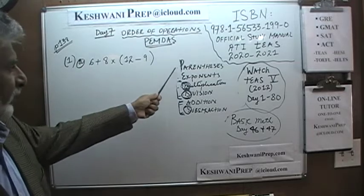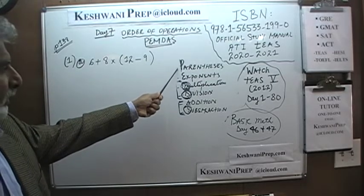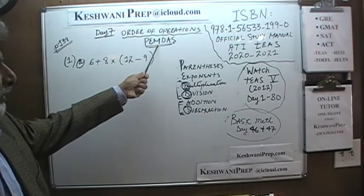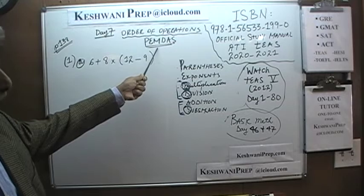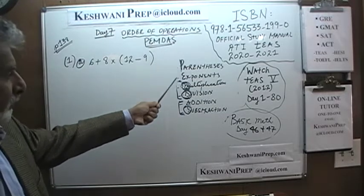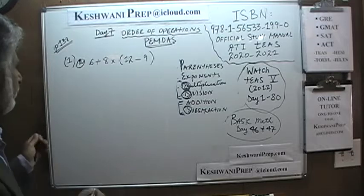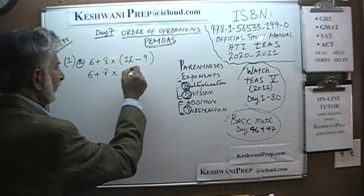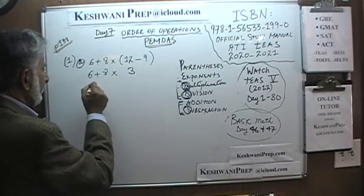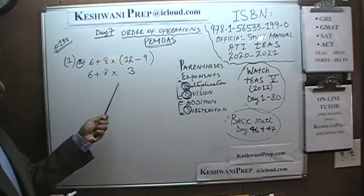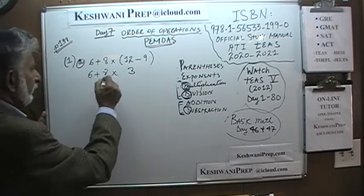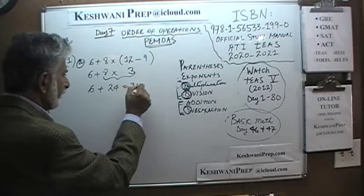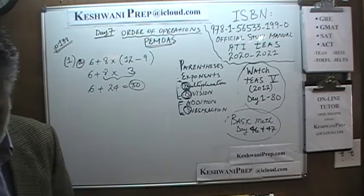The very first thing we do is the parenthesis that appears first — the order of operations: parenthesis, exponent, multiplication, division, addition and subtraction. I am sure you have heard of something called PEMDAS, which is a mnemonic device to help us remember the proper order of operations. So we do the parenthesis first. We end up with 6 plus 8 times 12 minus 9, and 12 minus 9 is 3. Now we have addition and multiplication. Multiplication comes before addition, so we do multiplication next. We end up with 6 plus 24, which gives us the grand total of 30.